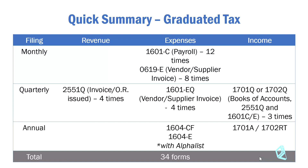The annual income tax return is Form 1701A for individuals and Form 1702RT for regular corporations. In total, you have 34 forms to file on a regular basis — that is if you have opted to use the graduated tax rates.